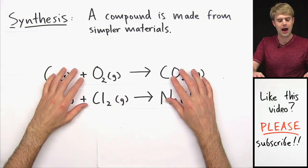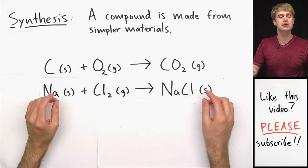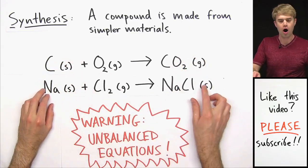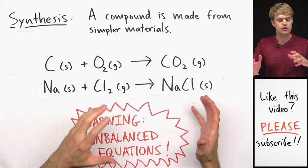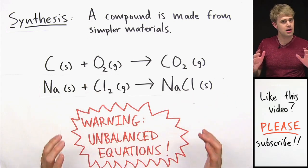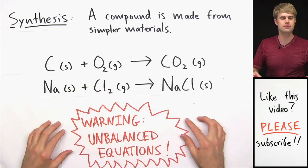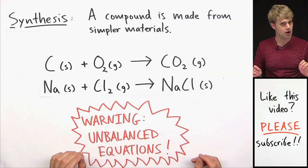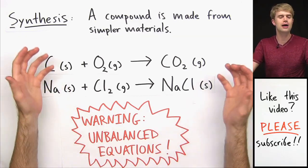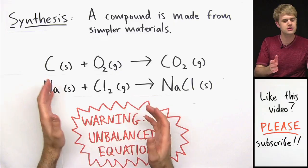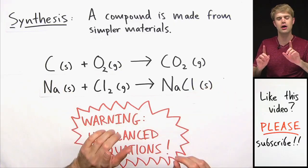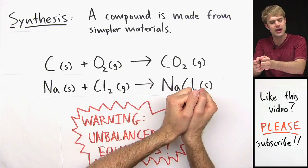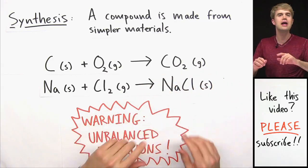A quick word about the equations I'm using in this lesson. Some of these equations, like this one right here, are unbalanced, so there might not be exactly the same number of atoms on both sides of the equation. Normally it's really important to balance equations, but when we're learning about the different types of reactions, the balancing numbers can be a little bit distracting. So here, I just want you to focus on the elements and how they're rearranging or combining with each other in different ways.